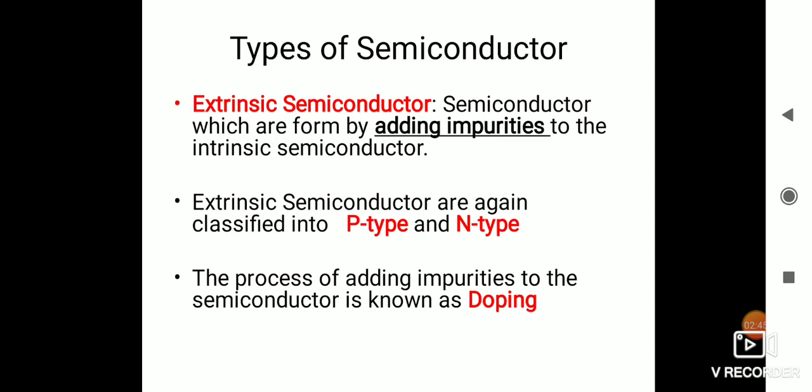All the electronic components that we will study further — such as transistors and others — are all made up of P-type and N-type semiconductors. So we can see that all the electronics materials are made up of P-type and N-type semiconductors.